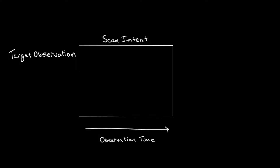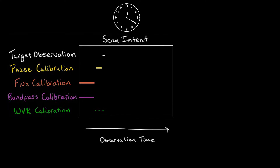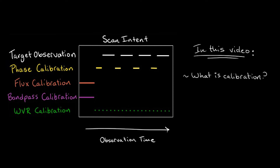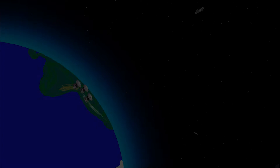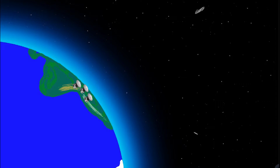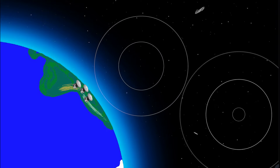Every ALMA observation contains a series of calibration observations which can take up a significant fraction of the time spent observing the sky. In this video, we'll learn about the fundamentals of ALMA interferometry calibration, why calibration data are needed, and how they are used to calibrate ALMA data. ALMA total power calibration is different from that required for interferometry and will not be covered in this video. The goal of observational astronomy is to capture electromagnetic or gravitational radiation from sources in space in order to understand the universe around us.